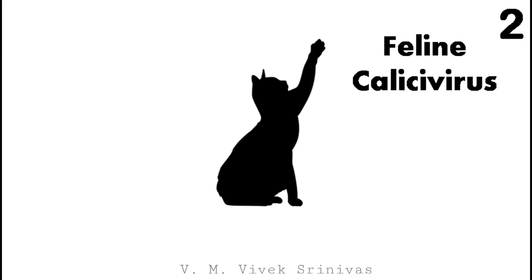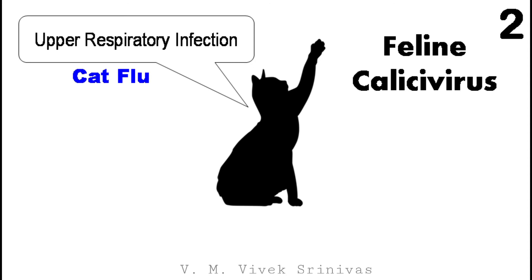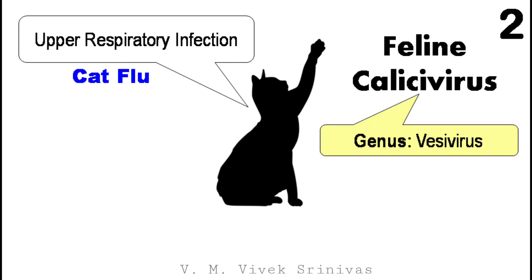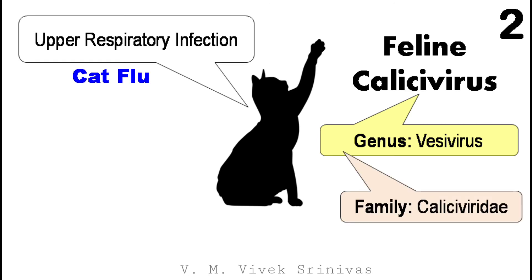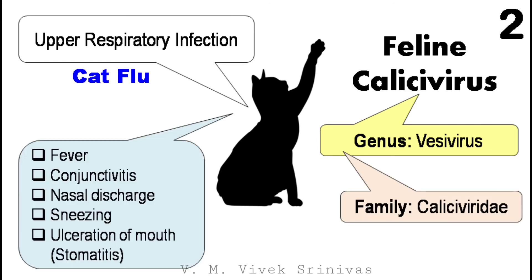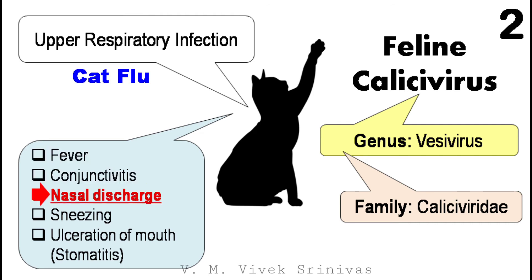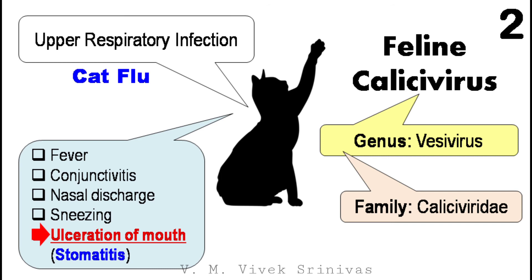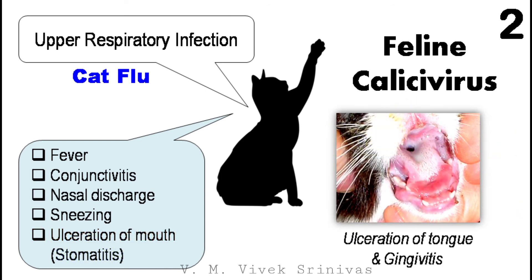Feline Calicivirus — one of the causative agents for cat flu, causing upper respiratory tract infection in cats. This virus is classified under the genus Vesivirus, family Caliciviridae. This disease is characterized by fever, conjunctivitis, nasal discharge, sneezing, and ulceration of the mouth, that is, stomatitis. The picture shown at right is the oral cavity of a cat with ulceration of the tongue and gingivitis — that is, inflammation of the gum — due to feline calicivirus.